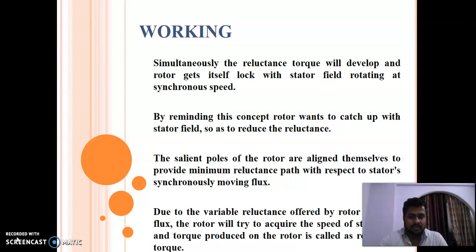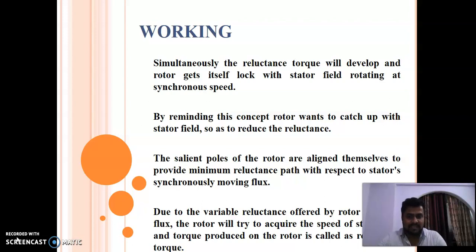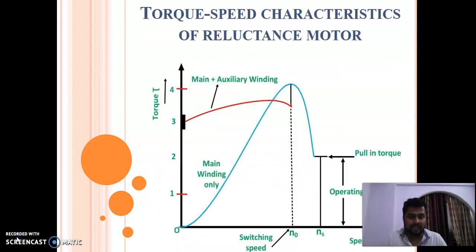Due to the variable reluctance offered by the rotor to the stator flux, the rotor will try to acquire the speed of the stator flux. The torque produced in this condition is called reluctance torque. It is due to the reluctance torque only that the single-phase reluctance motor operates at synchronous speed.